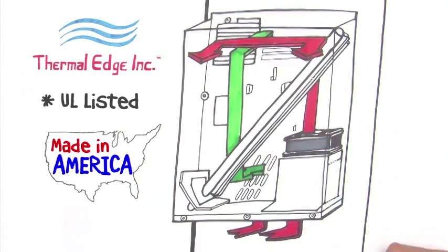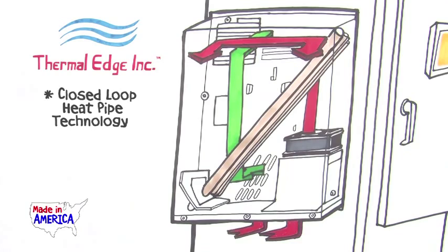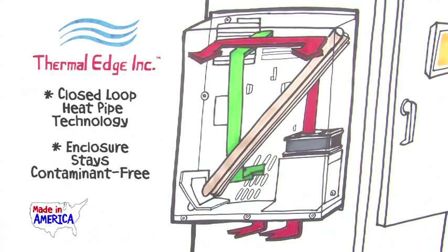Thermal Edge Air-to-Air Heat Exchangers use heat pipe technology to exchange heat from an electrical enclosure to the outside. And we do it while never letting outside contaminants into your electrical enclosure and its electronic contents.